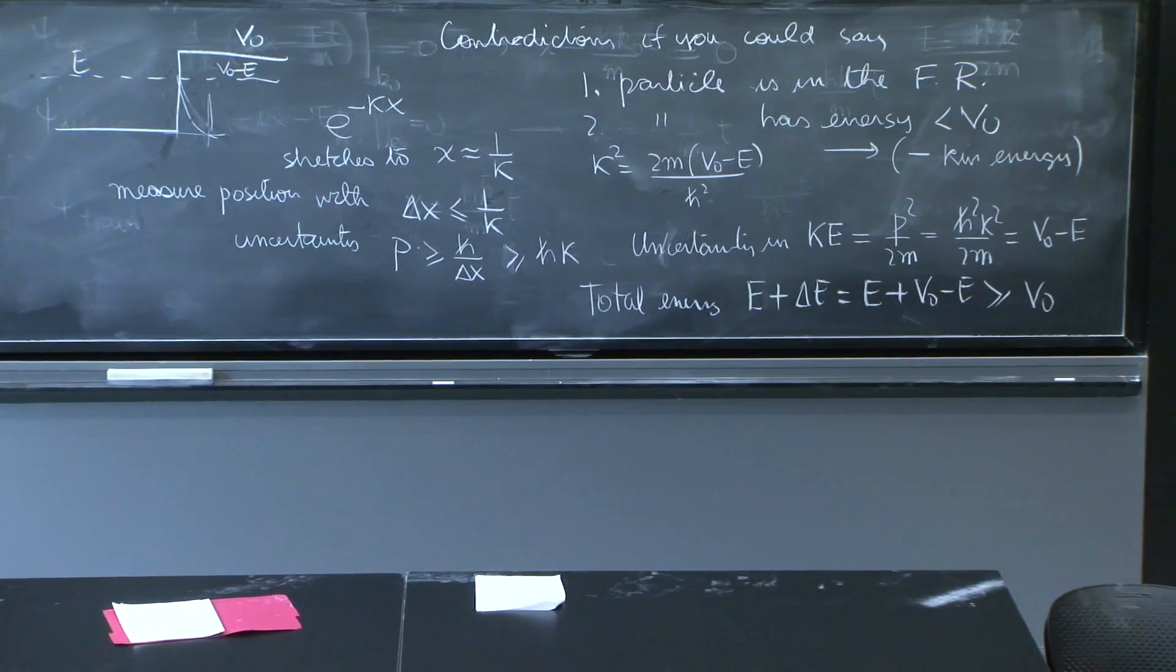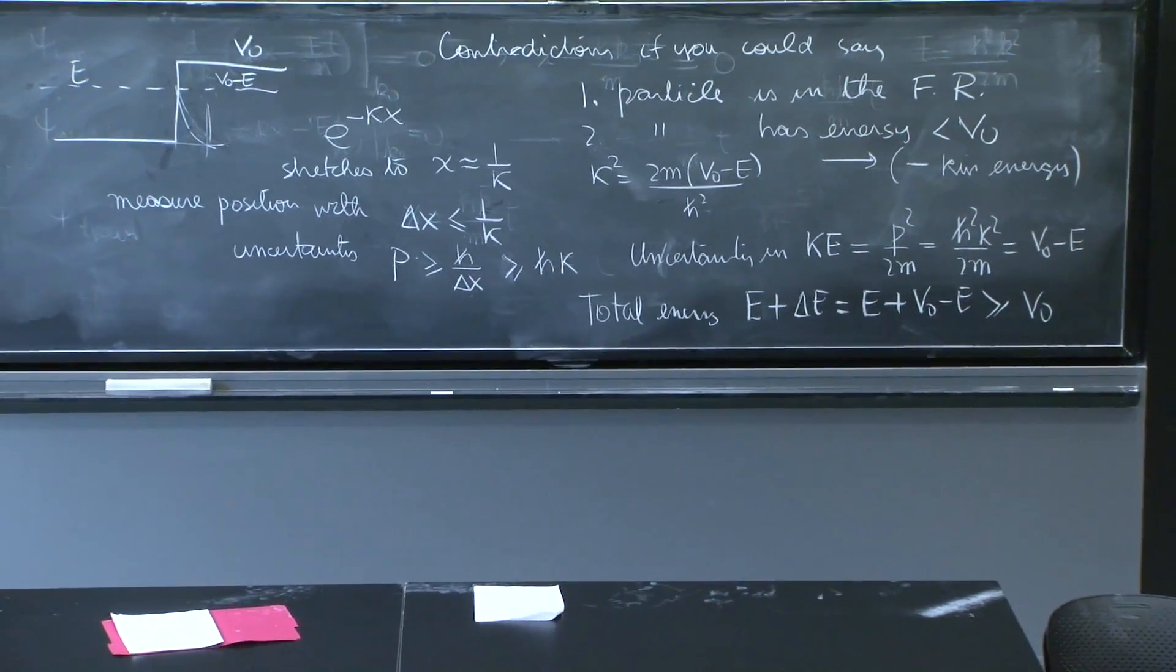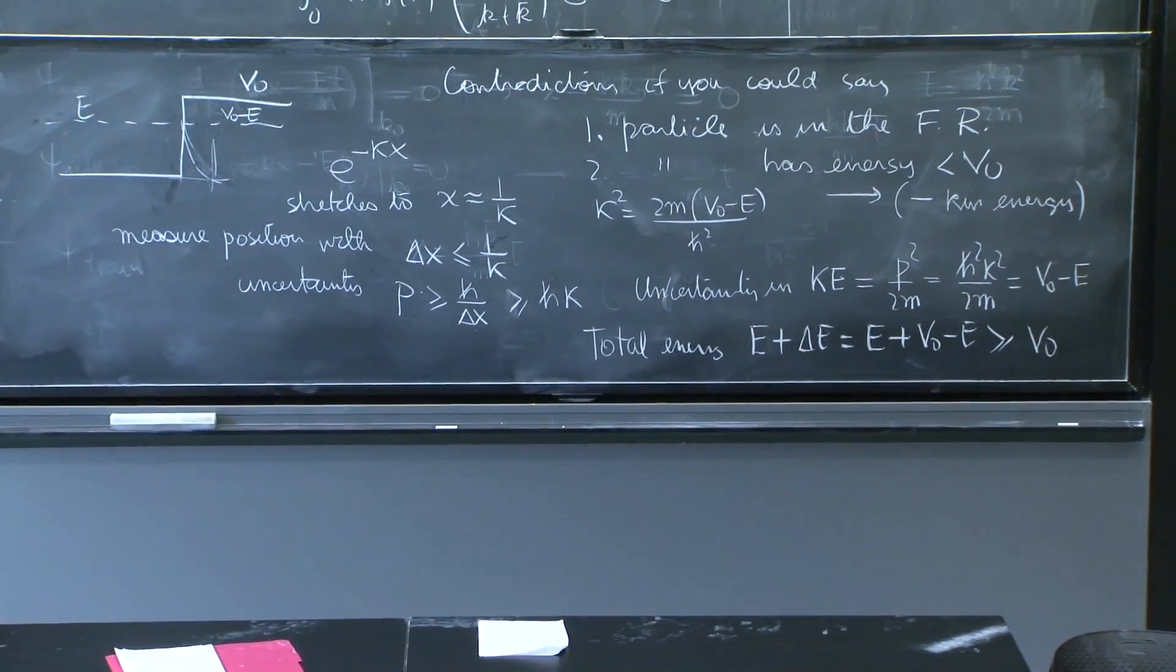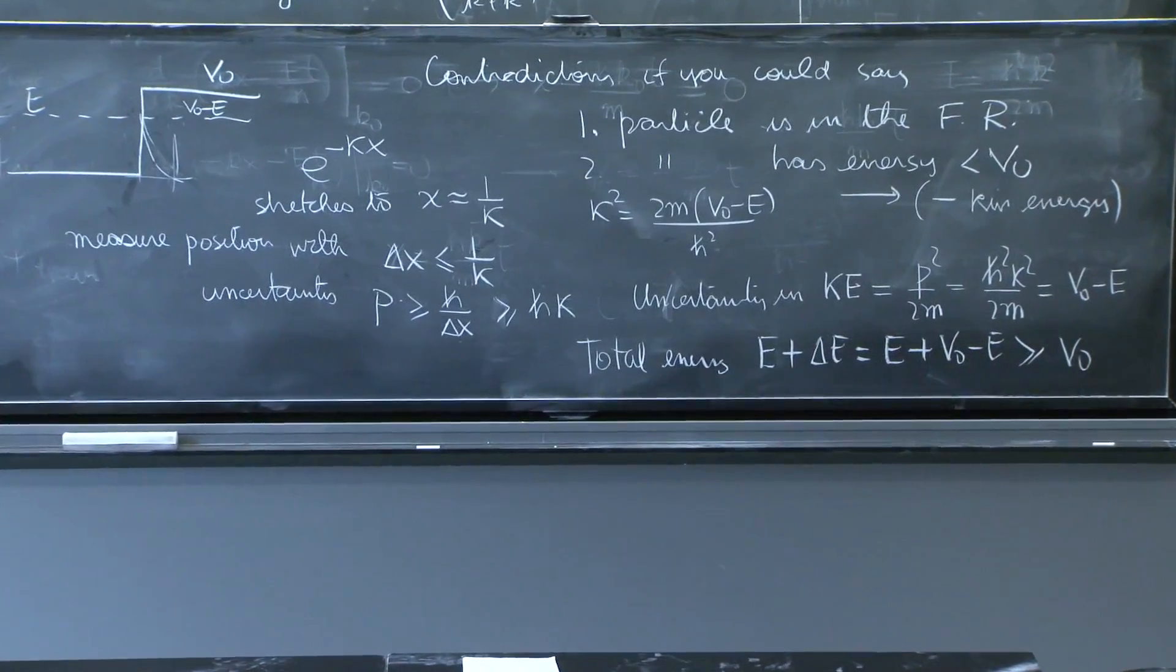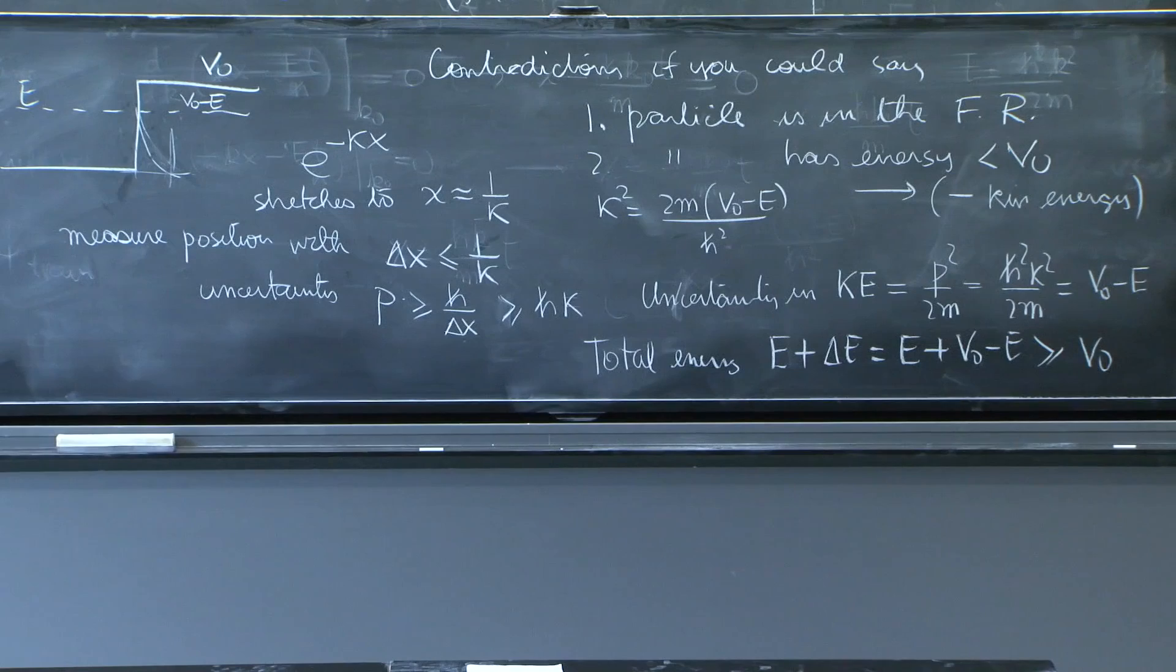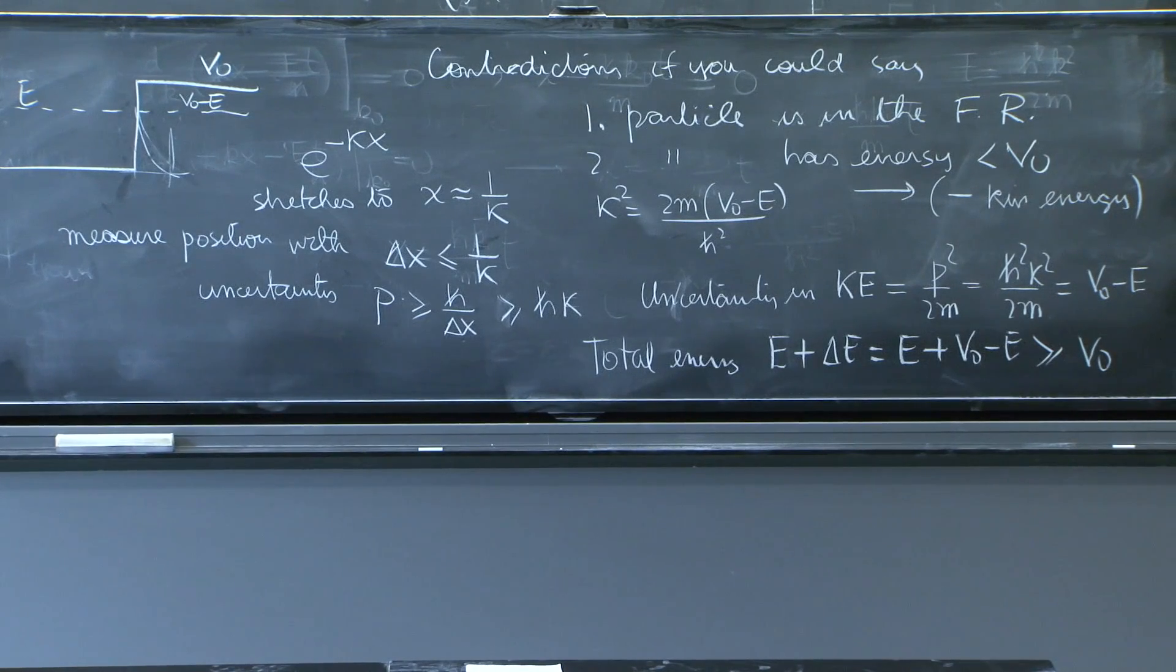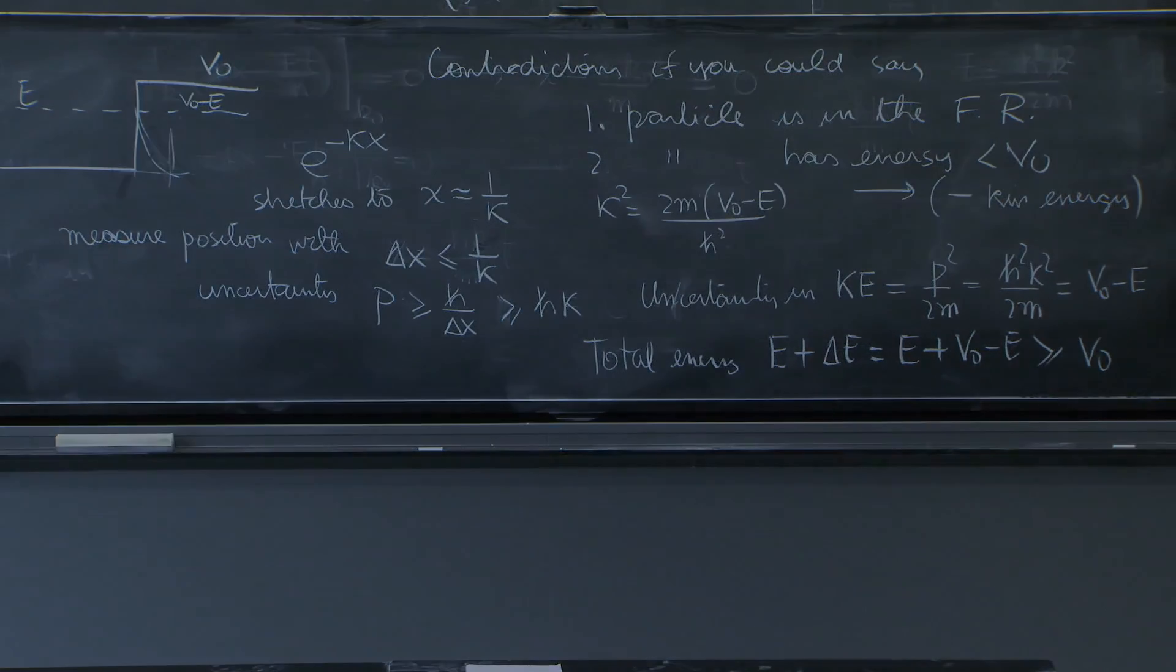The uncertainty principle conspires to prevent you from finding a particle with negative kinetic energy. And if you do detect a particle in the forbidden region, it will have total kinetic energy greater than or equal to zero—a normal particle, nothing strange about it.